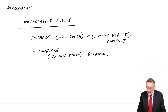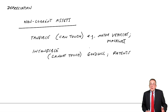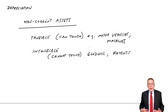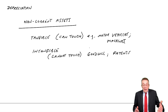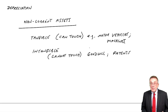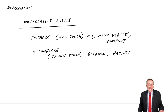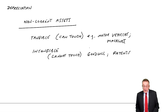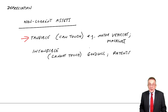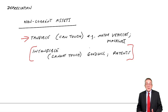Another example is patents. Suppose I've invented a new floor cleaner and I've got a patent, so nobody else is allowed to produce it — only me. Other companies might want to produce it, but they'd have to pay me because I've got the patent. It's worth a lot of money — the fact that I'm the only person entitled to produce it because I invented it. It's worth something; it's an asset, but it's not something you can actually touch.